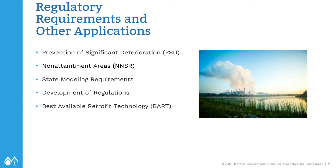Modeling is also used for the development of regulations to predict whether controlling an individual source will have a beneficial effect. An example is what's happening with ethylene oxide right now. EPA recently updated its cancer risk value, meaning it's considered more carcinogenic than previously thought. EPA is working with state agencies to get stack parameters, building dimensions, and other data from facilities with ethylene oxide emissions, and modeling to see what the impacts are on residential areas — to help decide if emission control requirements need to be implemented.